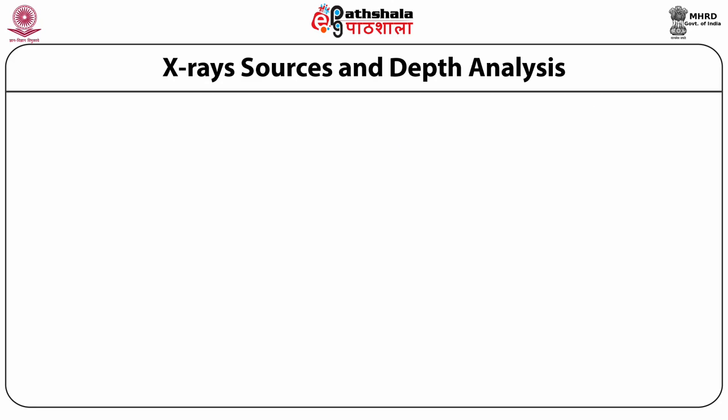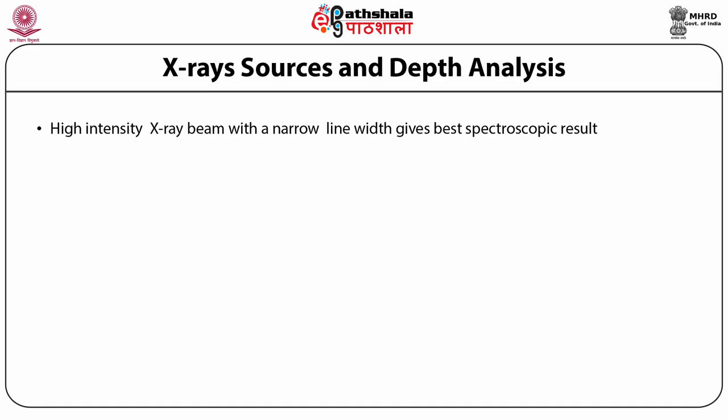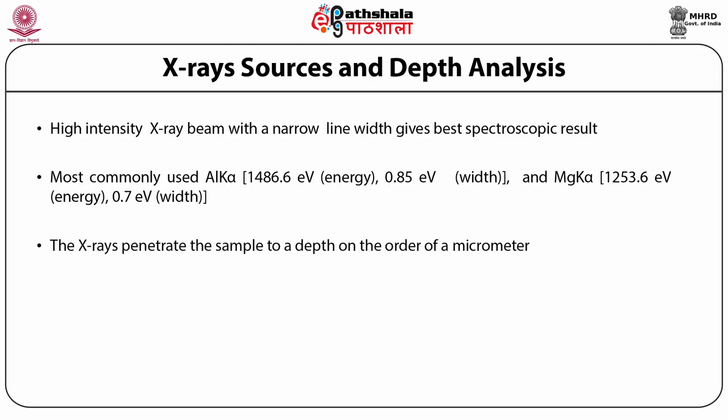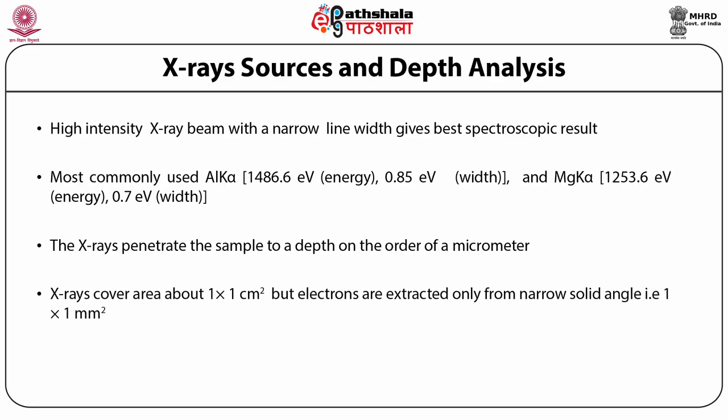In XPS, a high intensity X-ray beam with a narrow line width gives the best spectroscopic result. The most commonly used X-ray sources are aluminum K-alpha and magnesium K-alpha, both with line widths less than one electron volt. X-rays can penetrate the sample to a depth on the order of a micrometer and cover an area of about 1×1 square centimeter, but electrons are extracted only from a narrow solid angle of 1×1 square millimeter. Useful electron signal is obtained only from a depth of around 1 to 10 nanometers of the surface.